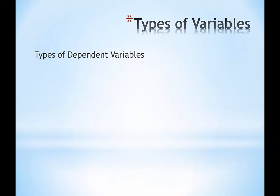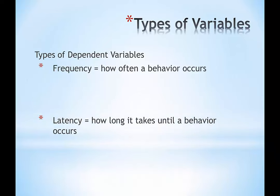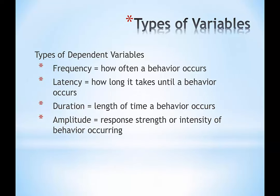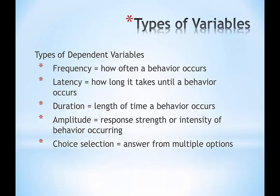To continue with types of variables, I want to dig a little deeper into dependent variables and give some examples. Those dependent variables are things that we measure—they tend to be continuous or discrete, and quantitative or qualitative—but there are five different categories we often talk about for types of dependent variables.